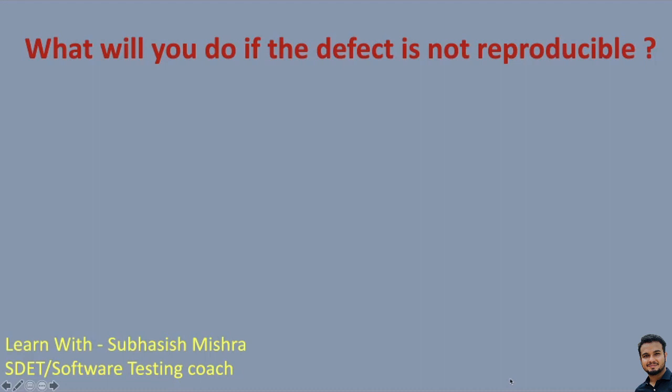Similarly, when you retest a defect, first you should be able to reproduce the defect, then only you will be able to understand — this was not working before, and after the fix this is working. So you should be able to reproduce the defect, then only you will find the difference of what is happening after the fix. Mainly the challenge happens when the developer is not able to reproduce the issue — they reject your bug and mark it as an invalid defect, the reason being it is not reproducible.